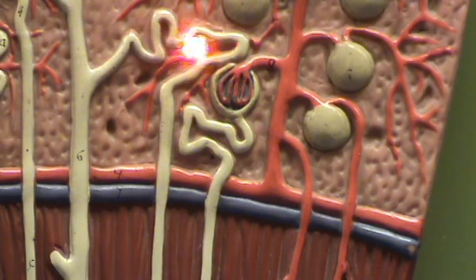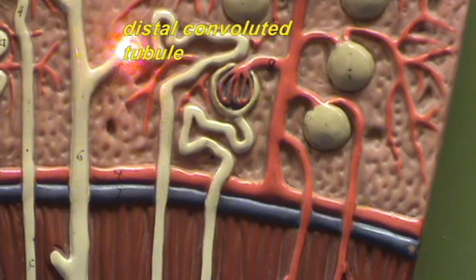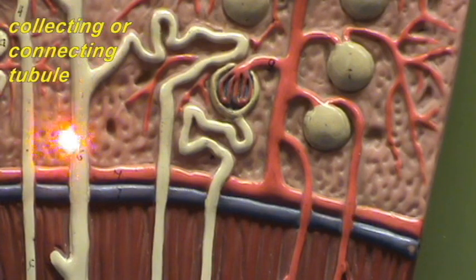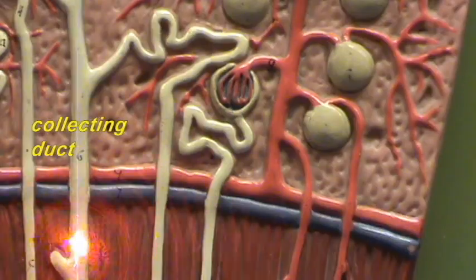Then we have the distal convoluted tubule being connected by way of a collecting tubule or connecting tubule to the collecting duct, which is going to leave the cortex and descend down into the medulla.